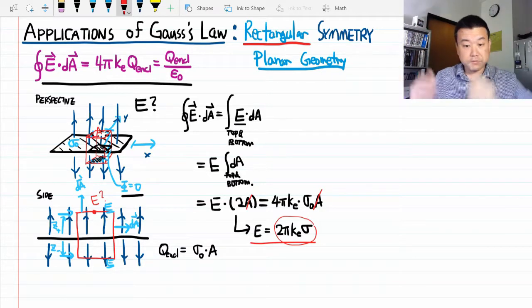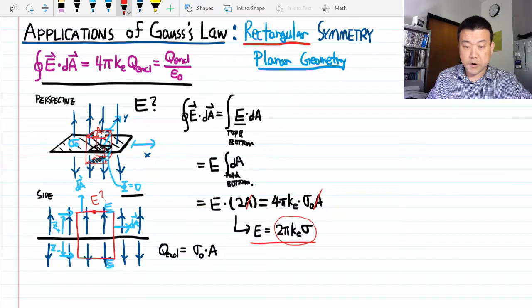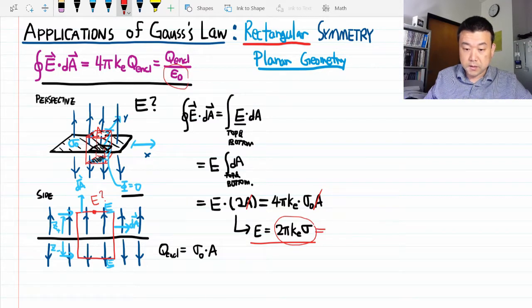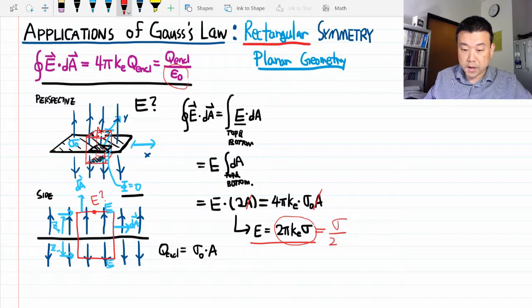So that's the result. In the version with the permittivity of free space, epsilon naught, this would be sigma over 2 epsilon naught.